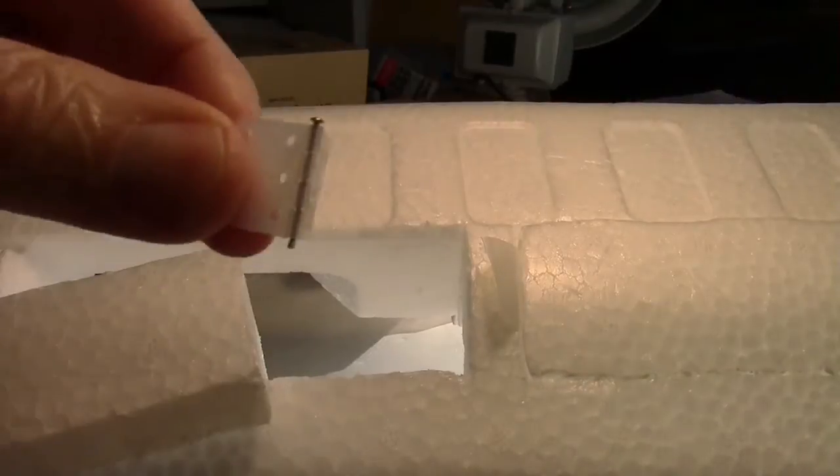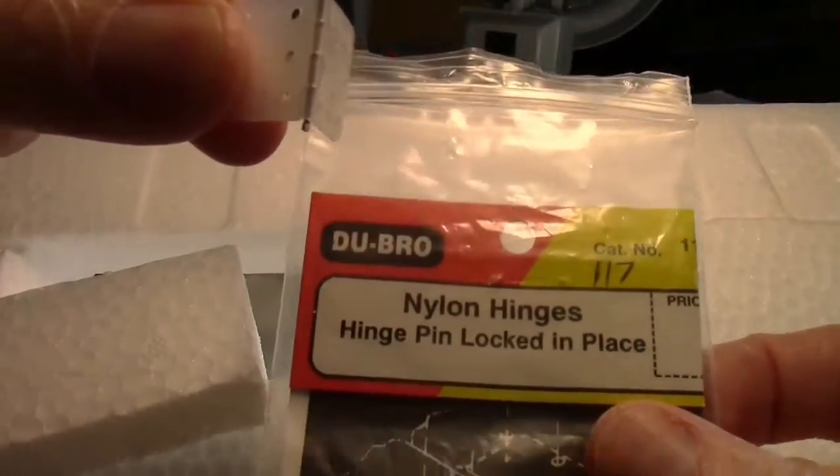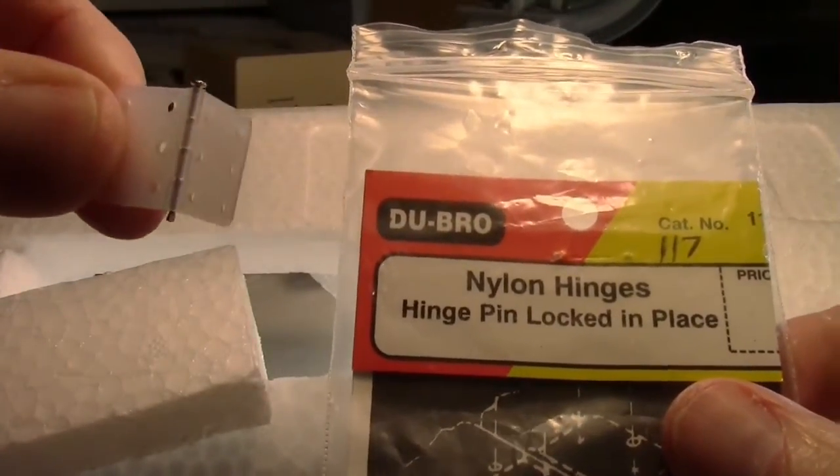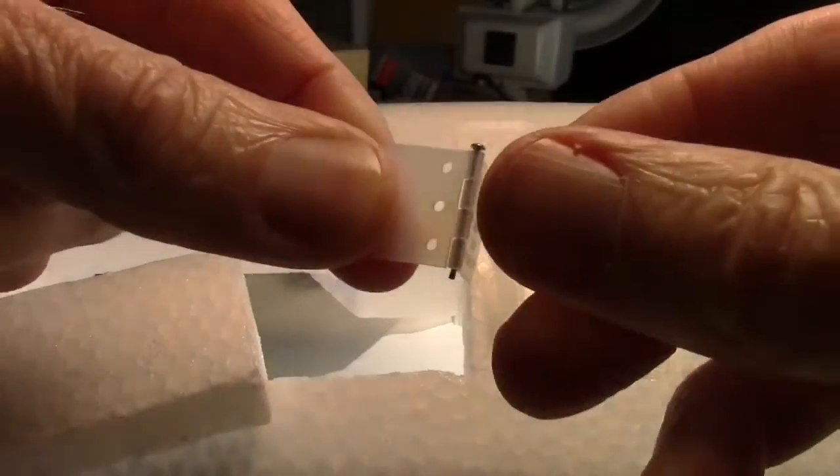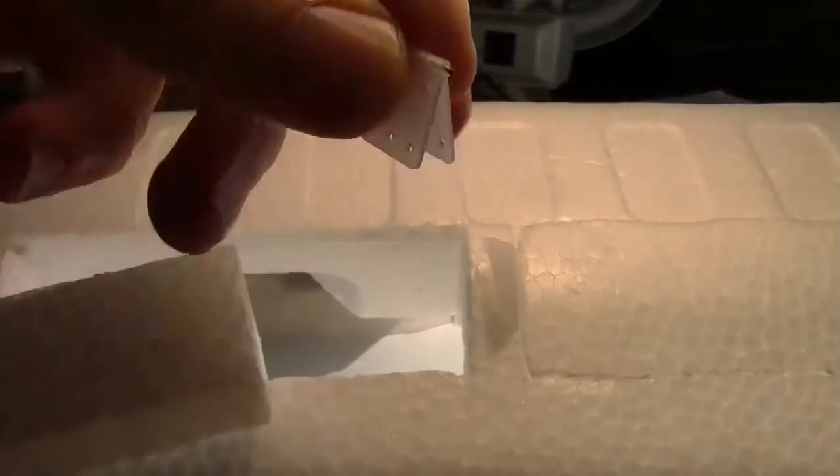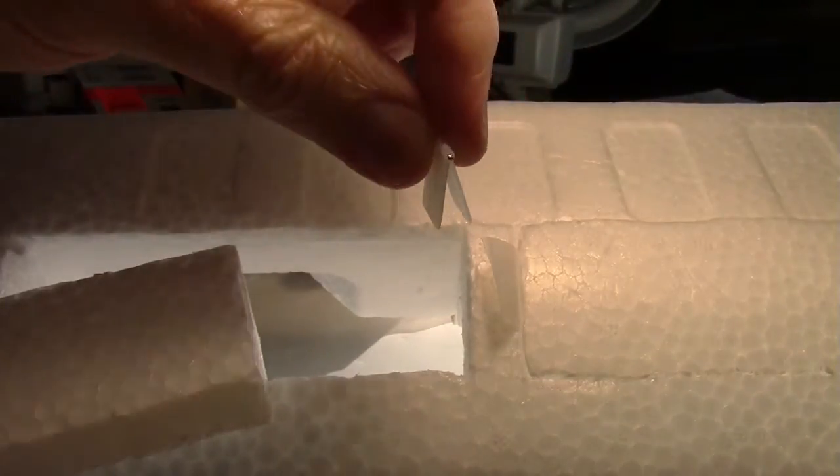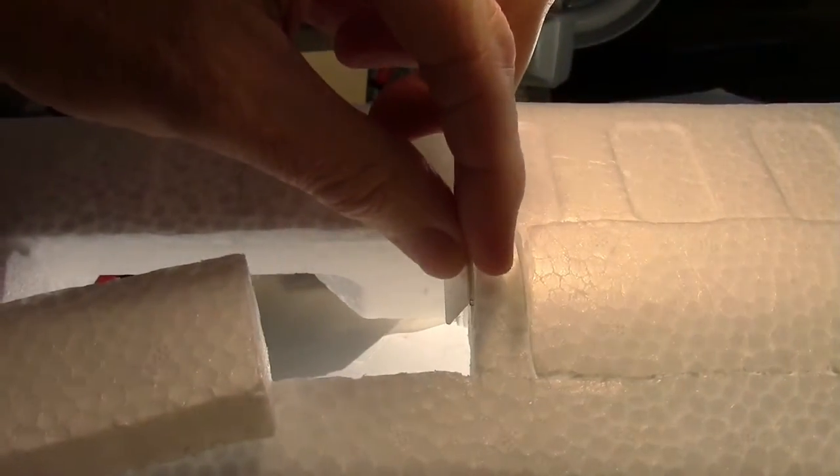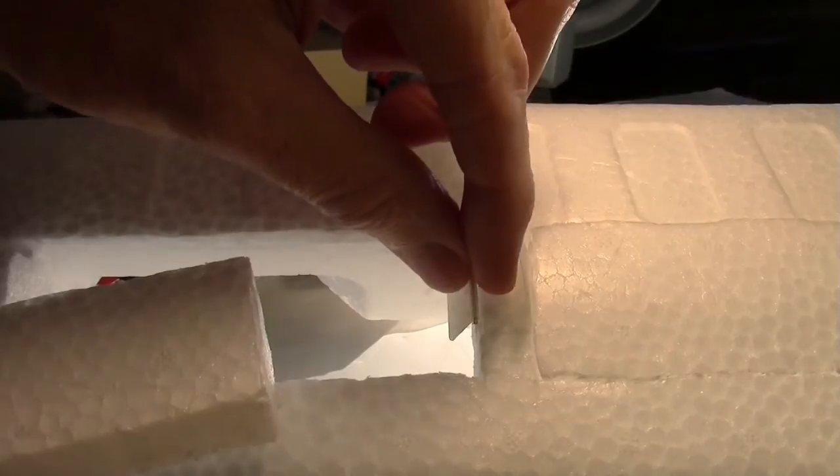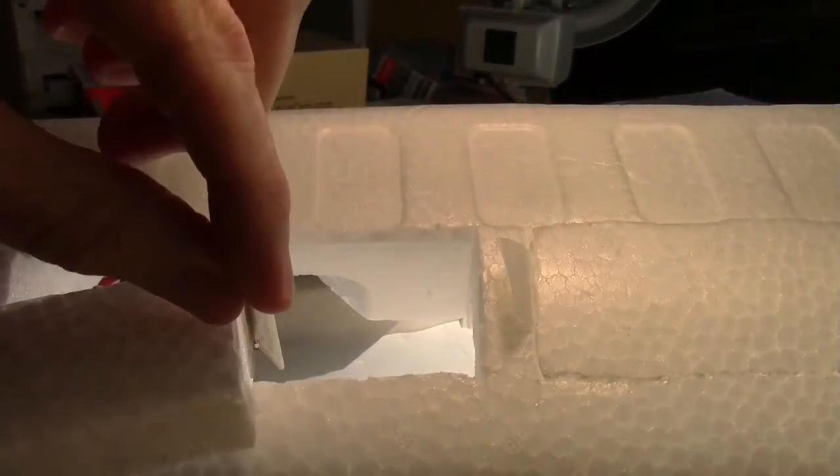Now I'm going to use my Dubro pin hinges here to hinge these doors. The trick is that since these hinges won't close, they won't go completely shut like that, you can't just stick them in like you would on a regular door and put one side on one side and the other on the door.